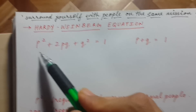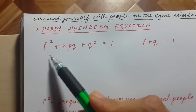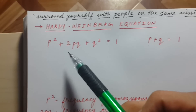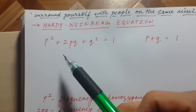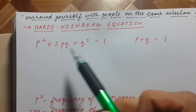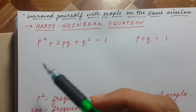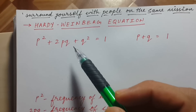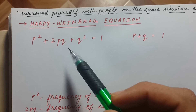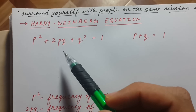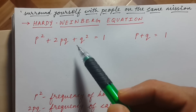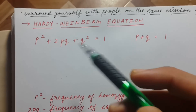All the information isn't given here — it is given in First Aid and other books. For instance, there should not be any mutation, there should not be any migration, and all those things. But we will focus mainly on how to solve the questions using this equation. You can read the full conditions from other books.